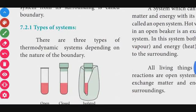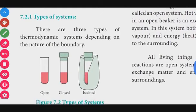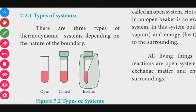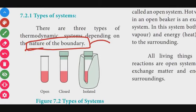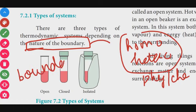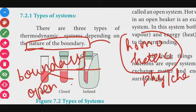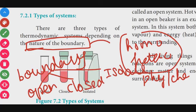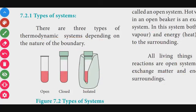There are three types of thermodynamic systems based on the nature of the boundary: open system, closed system, and isolated system.